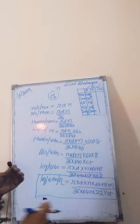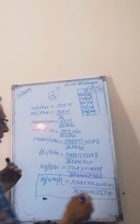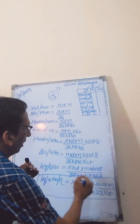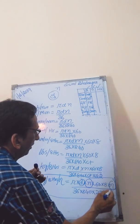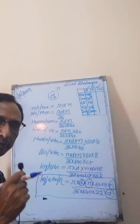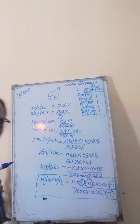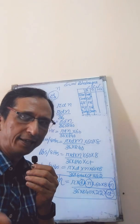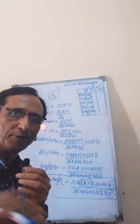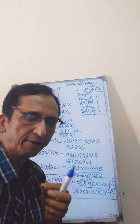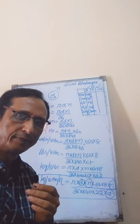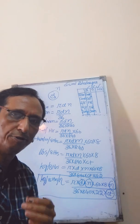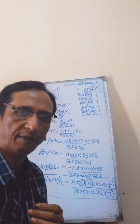Friends, this is the formula. The variables are D, N, efficiency, and count. This is a simple way to calculate the production and I think it is very easy to calculate. Thank you friends, have a nice day. In the next lecture, we will study how the spindle speed, the TPI, or the front roller surface speed is known to you and how we can check it.